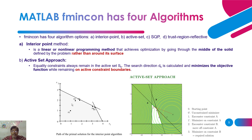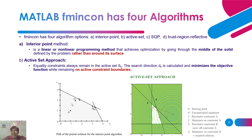So those are the four algorithms available in the MATLAB fmincon function: interior point, active set, sequential quadratic programming, and trust region reflective. Please explore how to pass the methodology to the fmincon function along with your constraints and optimization function, and determine which method should be adapted to optimize your problem. These four methods are the ones covered in this course syllabus.